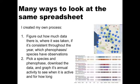Even after delineating the strengths of the summarized and raw data, there are still many ways to look at the same spreadsheet. I created my own process that worked for me. First, I tried to figure out how much data there is, where it was taken, if it's consistent throughout the year, and which phenophases have sufficient observations. This part was made easier with the phenology visualization tools under the Get Data tab of the NPN's website. By clicking on the US map and selecting a species and phenophase, I was able to see the geographic distribution of sites as well as the total number of observations for different species, which is shown on the map on the right.